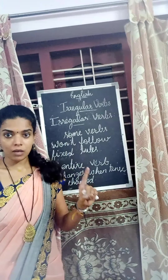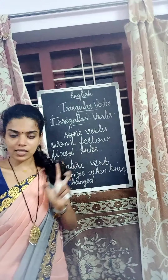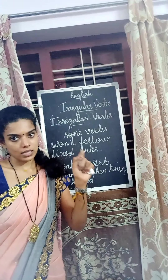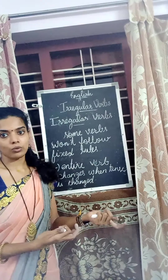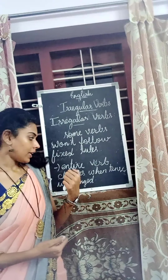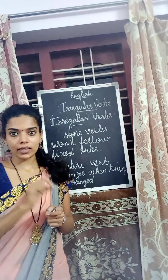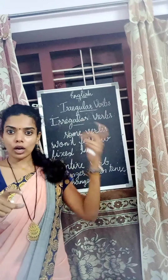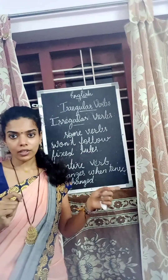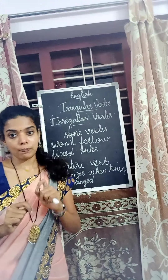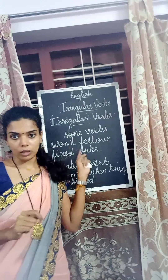For regular verbs, we simply add 'ed', 'd', or 'ies' when it is converted into past tense. In irregular verbs, the entire verb is changed while changing the tenses. For example: 'think' — the past tense is 'thought'. 'Think' is one word, 'thought' is a different word. So 'think' is changed into 'thought' while changing to past tense. Think comes under irregular verbs.